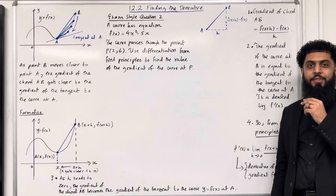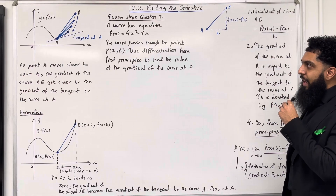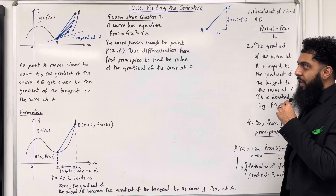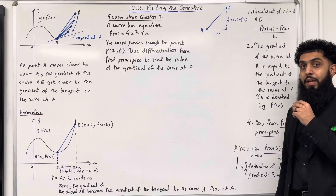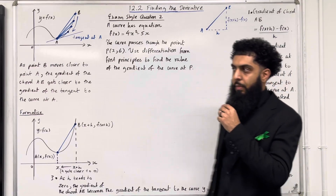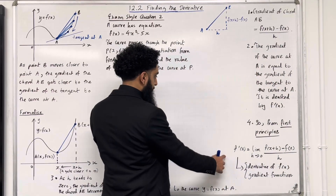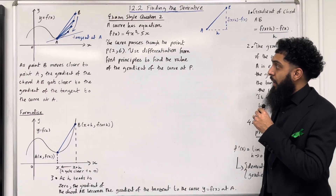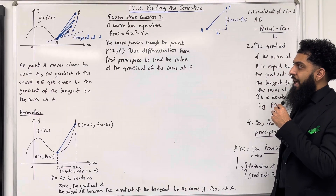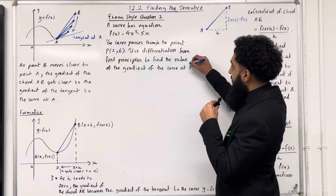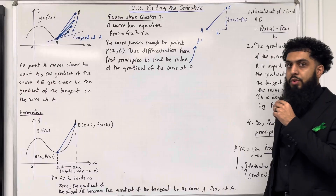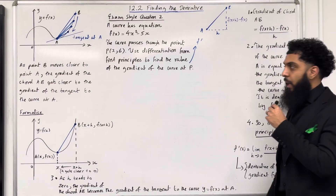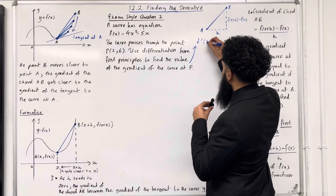Let's have a look at exam style question 2. A curve has equation f of x equal to 4x squared minus 5x. The curve passes through the point P, which has coordinates 2, 6. Use differentiation from first principles to find the value of the gradient of the curve at P. The gradient of the curve at P is given by substituting x equals 2 into the gradient function, so we are trying to work out f dash of 2.